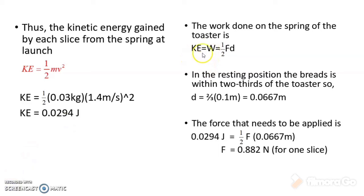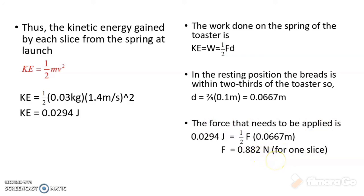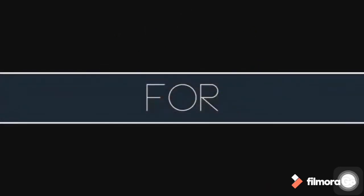The kinetic energy calculated is equal to the work done on the spring of the toaster, which equals ½ × force × distance traveled by the lever. In the resting position, the bread is within two-thirds of the toaster, so the distance the lever needs to travel is 0.0667 meters. We can now calculate the force that needs to be applied, which is 0.882 newtons. Therefore, the force we need to apply to the lever to make sure the bread does not get thrown out of the toaster when it is ready is 0.882 newtons.